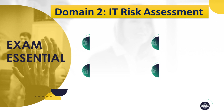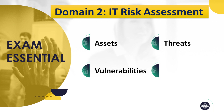The components of risk identification include: Assets — identify what needs protection; these could be data, hardware, software, or even personnel. Threats — recognize potential dangers like cyber attacks, natural disasters, or human errors. Vulnerabilities — discover weaknesses in your systems that could be exploited by threats. Impact — understand the consequences of a risk materializing, such as financial losses or damage to reputation.